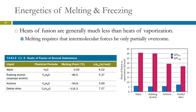Heats of fusion are generally smaller than heats of vaporization, because to melt the ice you only have to partially overcome the intermolecular forces, whereas to boil or vaporize it, you have to completely break loose. Here's a graph showing that: vaporization in pink and fusion in blue. We see that the energy needed to vaporize is much higher than what's needed to melt. Here's a table from your textbook showing several liquids, their melting points, and the heat of fusion — those are not things you memorize, you just look them up when you need them.